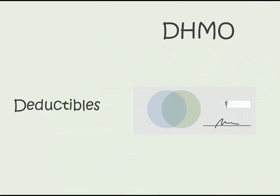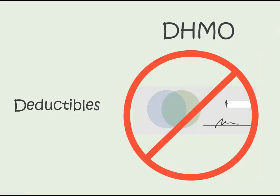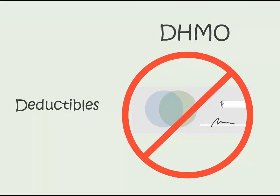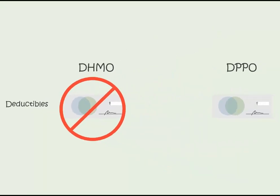Deductibles. A deductible is a specific dollar amount you must pay before the insurance carrier will pay towards your claims. DHMO plans do not have a deductible. However, DPPO plans do, and the deductible differs depending on the insurance company and the type of plan you choose.